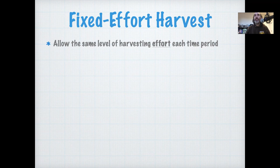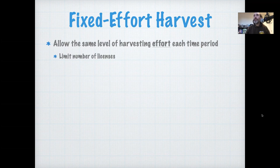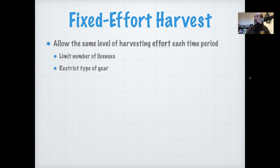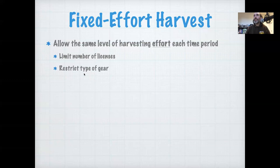Examples of limiting effort could be things like limiting the number of licenses — hunting licenses or fishing licenses for either recreational or commercial fishermen. That limits the number of individuals that can participate in the harvest. We can also put restrictions on the type of gear, which controls the efficiency of that effort. If you just limit the number of licenses, that creates a strong incentive for individuals to be much more efficient, potentially resulting in the same amount of overharvest.